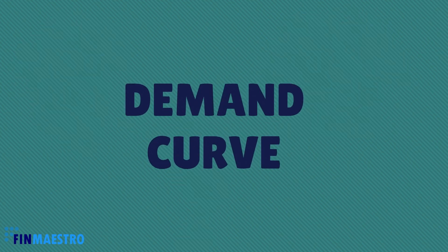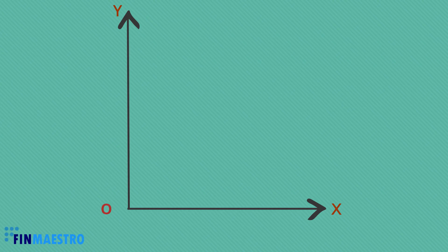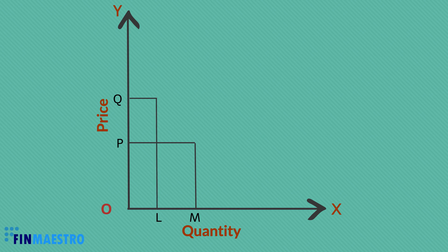Let's now plot the demand curve of an imaginary customer. Along OX is the quantity of goods purchased and along OY is the price. It can be seen that at price OP, OM is the quantity which would be purchased. At price OQ, which is a higher price, the quantity demanded becomes lesser at OL. At OR, which is the lower price, the quantity demanded increases to ON.